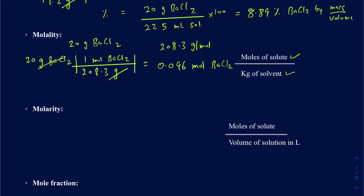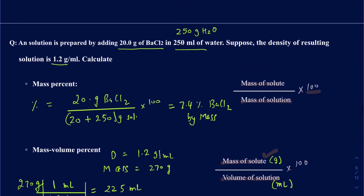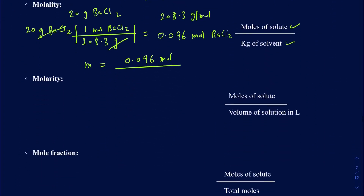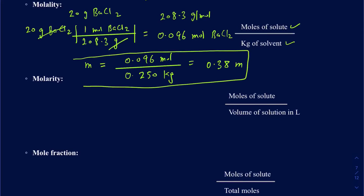We already know how much solvent we have, so we can find the molality. Molality is 0.096 moles divided by the kilograms of solvent. We're using 250 grams of water, which is 0.250 kilograms — and note we use the solvent here, not the solution, so we use 250, not 270. That gives 0.096 divided by 0.25, which is 0.38 molal.